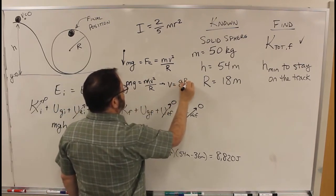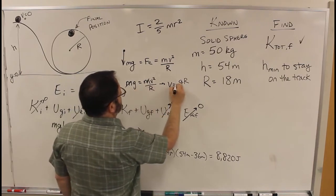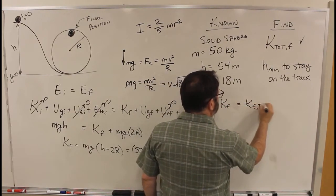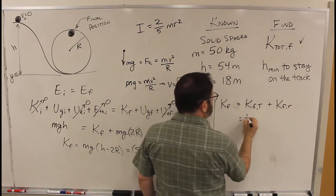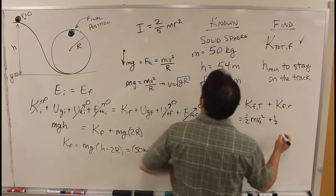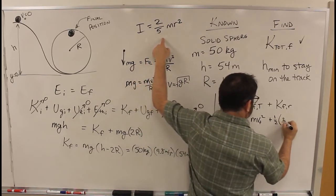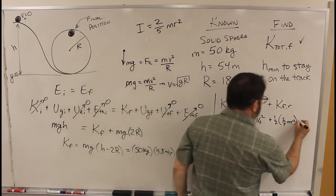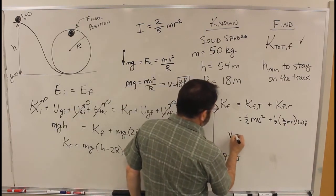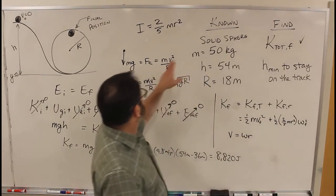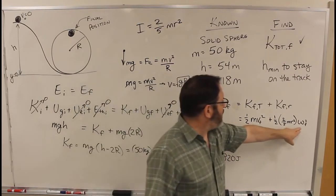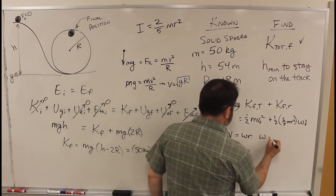So K final is K final translational plus K final rotational. So that's 1 half MV final squared plus 1 half I, 2 fifths MR squared, omega final squared. And then we also have to remember that V is omega R. We have a relationship here for V, so that means we should probably convert this omega into a V. So omega equals V over R.